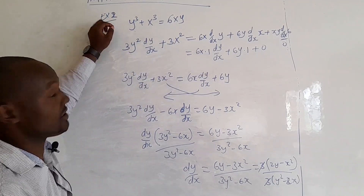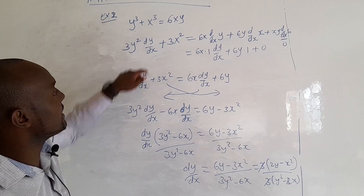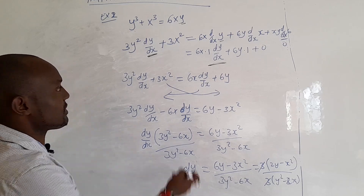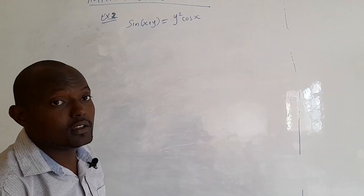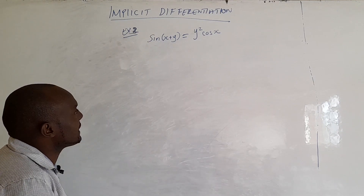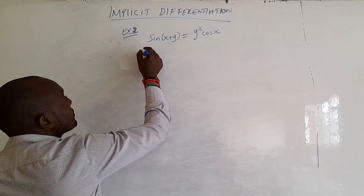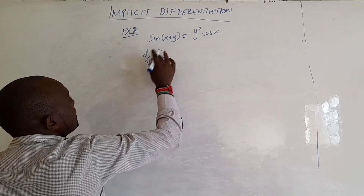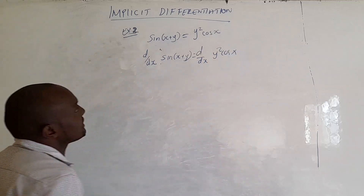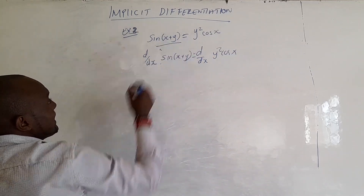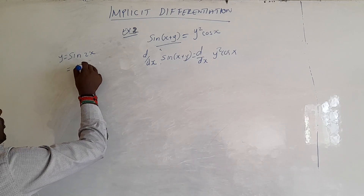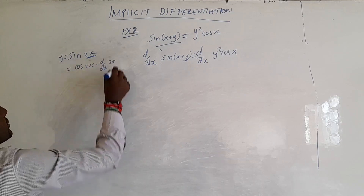Let us take Example 3. Here we have sine of (x plus y) equals y squared cosine x. We want to differentiate with respect to x, differentiating both sides. On the left, differentiating sine gives cosine of the whole argument (x plus y), then we must differentiate inside: that gives us cos(x+y) times the derivative of (x plus y). On the right we apply the product rule to y squared cos x.